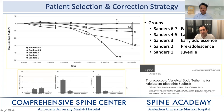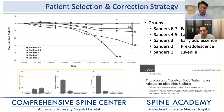We don't just base remaining growth on Sanders staging. We also look at other indicators of skeletal maturity: parental height, the child's height, and menarche. But Sanders staging is a useful proxy. Before going into patient examples, do you have any questions?